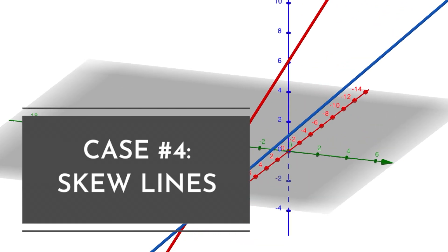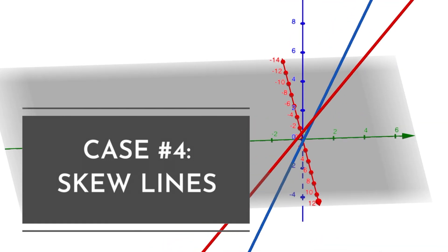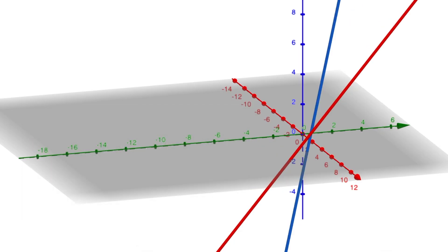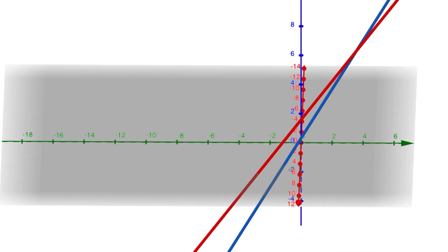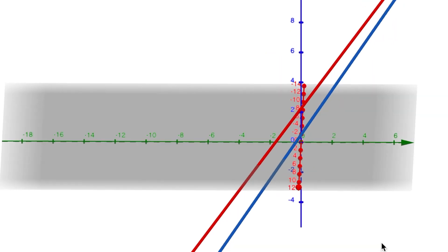Lines that are skew do not intersect with one another, but they're also not parallel. Now, you can see an example of this as I spin my way around these two lines in three dimensions. They don't intersect, and they aren't parallel.